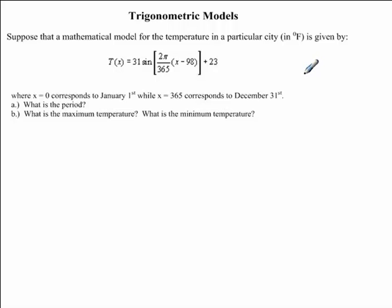In this mini-clip, we will be looking at trigonometric models as we answer this question. The question reads: suppose that a mathematical model for the temperature in a particular city in degrees Fahrenheit is given by T(x) = 31 sin(2π/365(x - 98)) + 23, where x = 0 corresponds to January 1st, while x = 365 corresponds to December 31st.